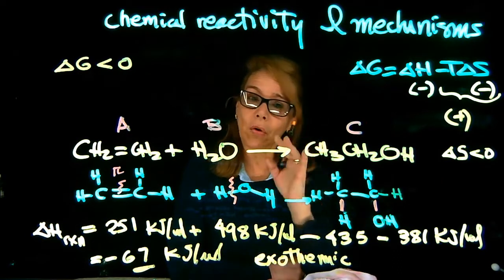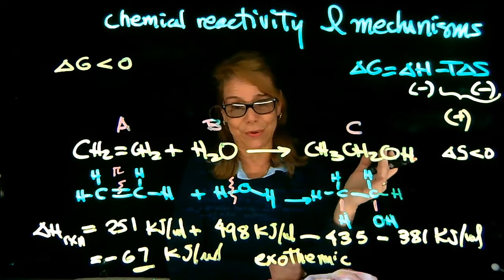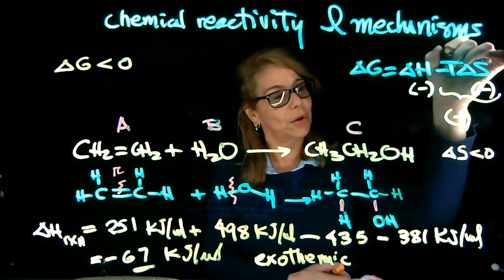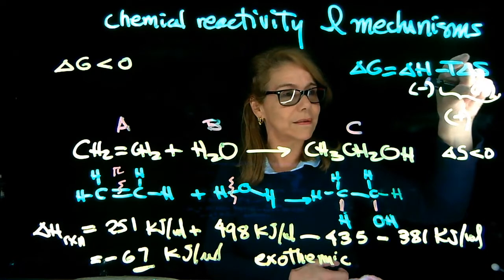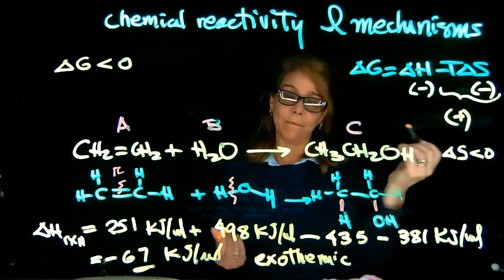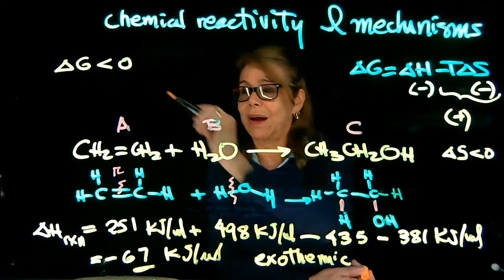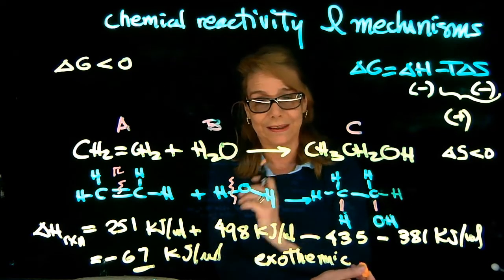And so that will depend on the temperature. So normally when we do addition reactions, we work at lower temperatures to have this term being smaller than that. But the more exothermic the reaction is, chances are we will have a negative delta G.